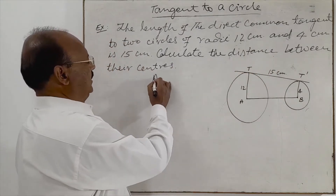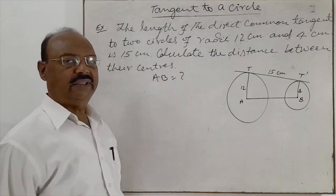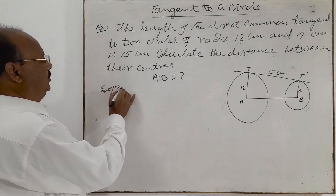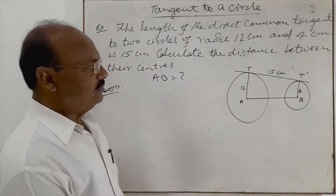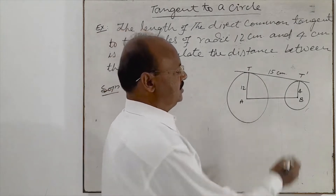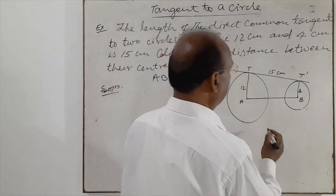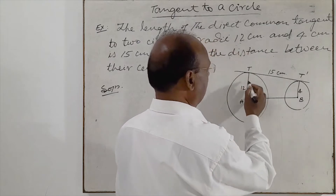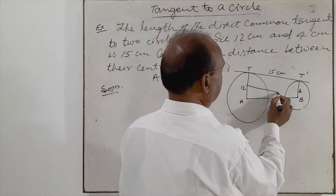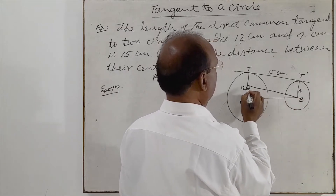So we have to find out the length of AP. Now let us see the solution. We'll start with a very simple construction here. From the center B of the circle we'll draw a line perpendicular to AT, like this. This line is perpendicular.